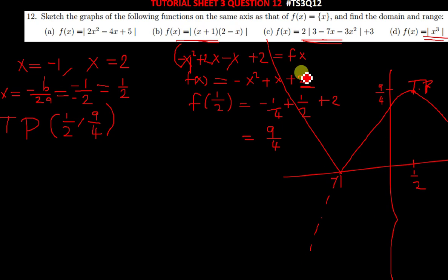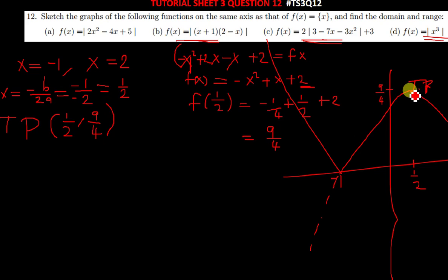Since it's in absolute value symbols, it implies that whenever you put any value of x, the answer you get will always be positive and not negative — meaning instead of going to the negatives, it starts going back to the positives. Thank you very much for watching today's tutorial. See you in the next video. Shalom, shalom.